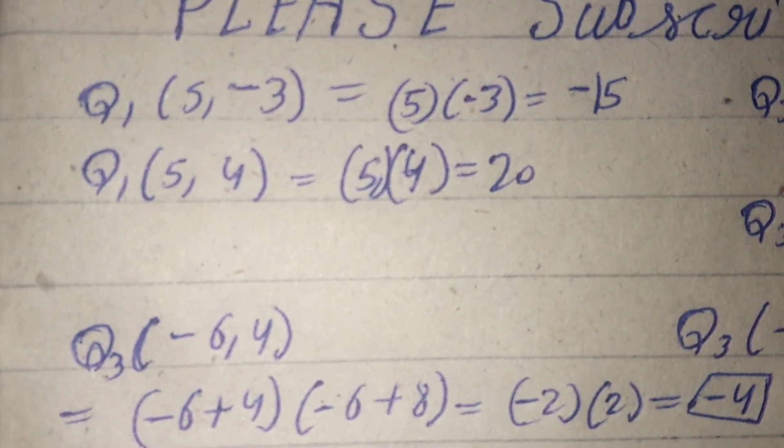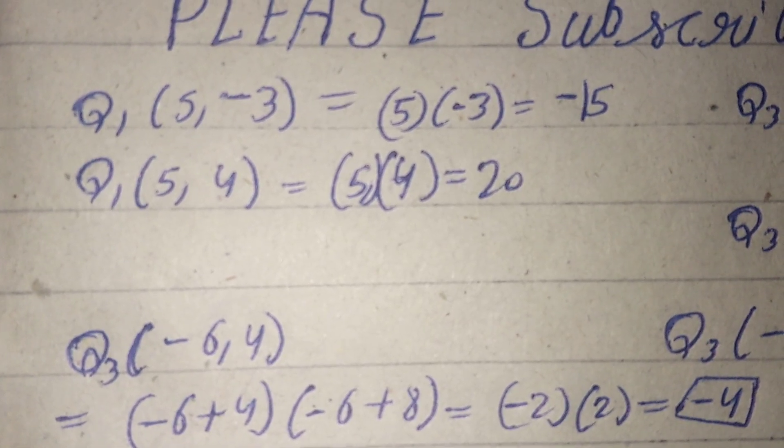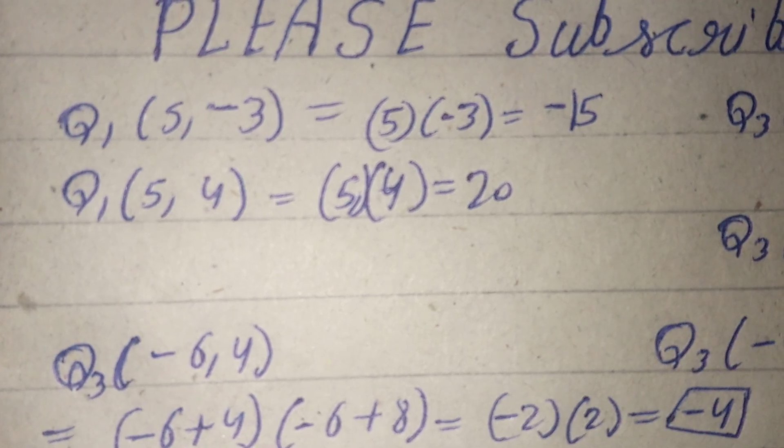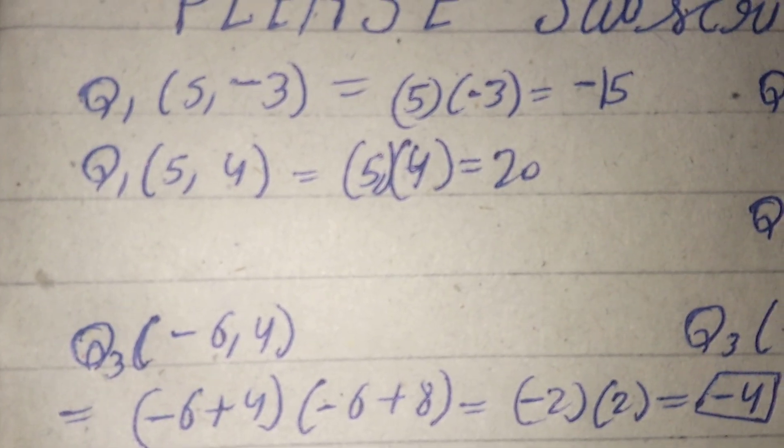Here we can see q1 at x=5 and y=-3 has value 5 times -3, which is -15.